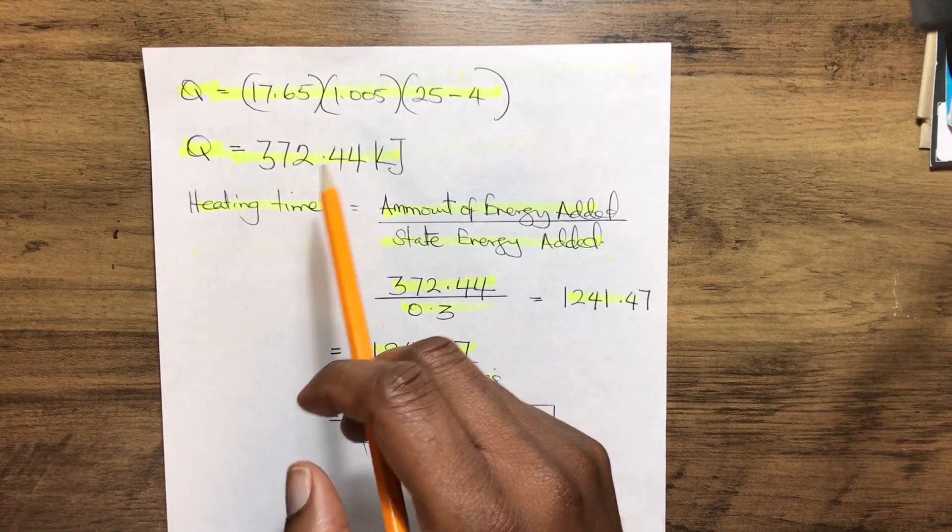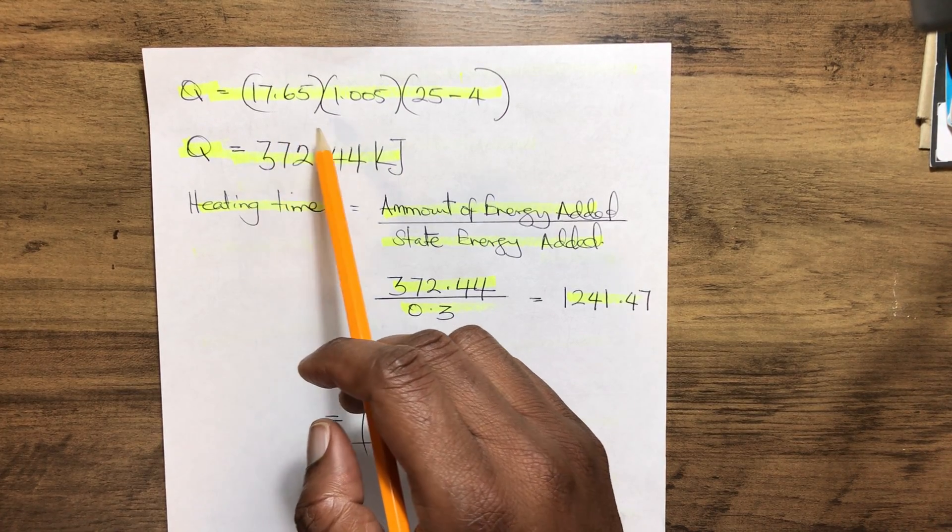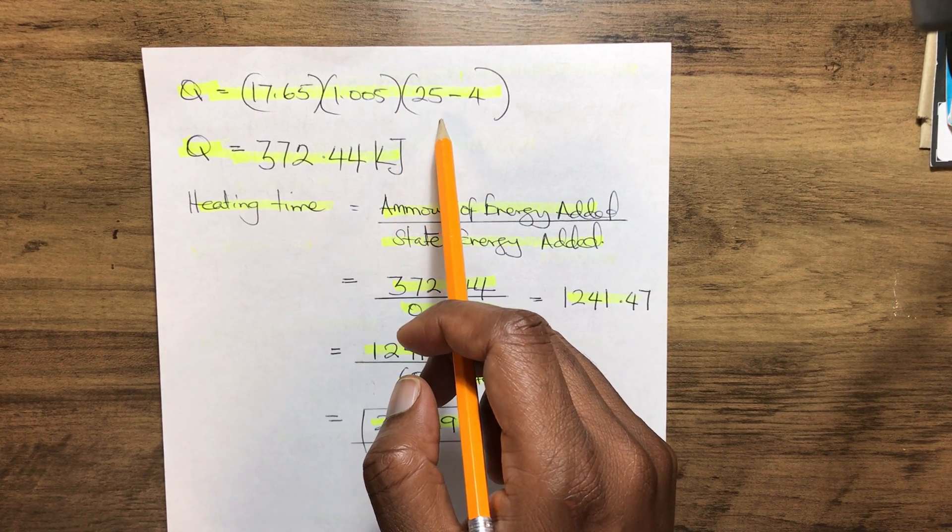So if we put all our values in, that gives us 17.65 multiplied by 1.005 multiplied by (25 minus 4), which gives us 372.44 kilojoules.